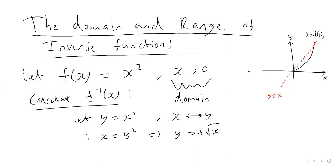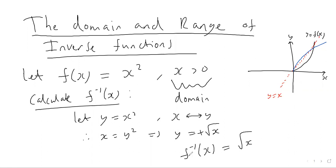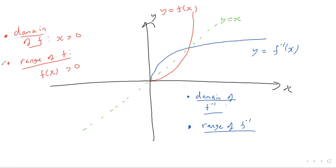When you reflect it, you get this shape here. We want our y coordinates to be positive, because the coordinates on the blue curve are obviously positive y coordinates. So our inverse function would be f inverse of x equals the positive square root of x. Now let's think about the domain and range of this inverse function.